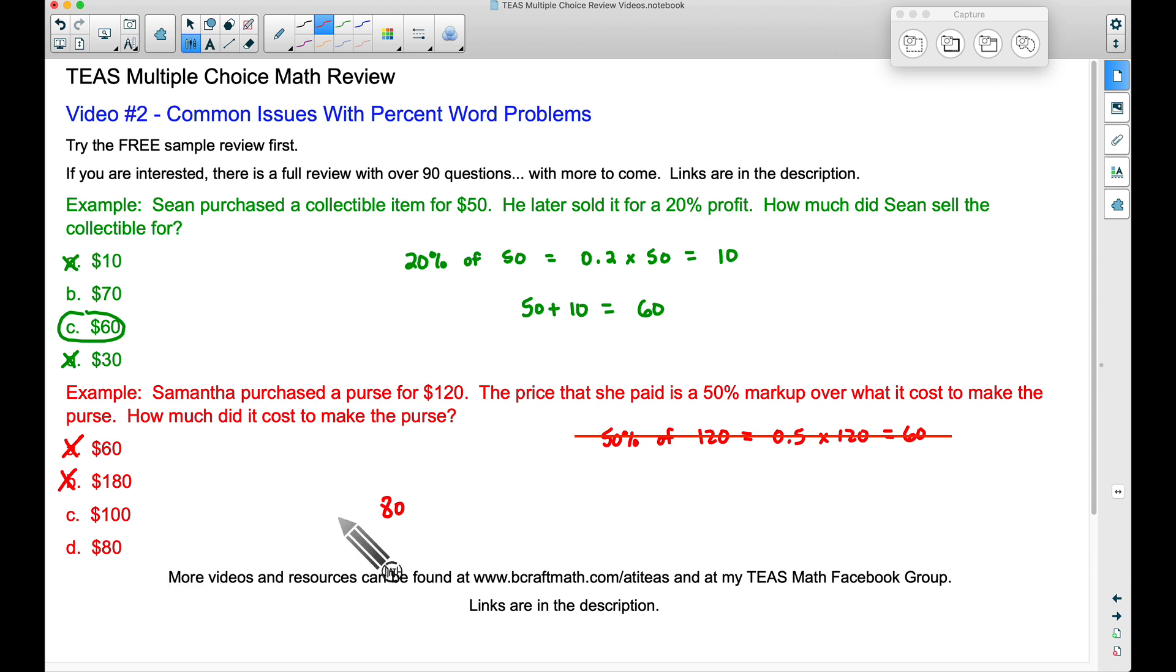Let's suppose it did cost 80 bucks to make the purse. Now 50% of 80, let's find 50%, 0.5 times 80, that's 40 bucks. This is the markup, this is the 50% markup over what it cost to make the purse.